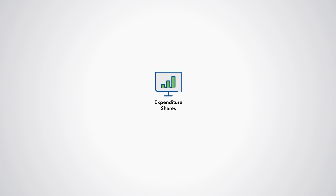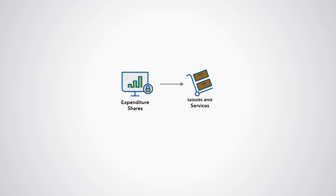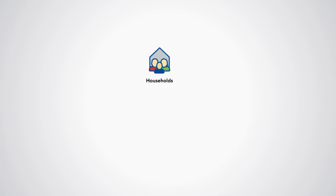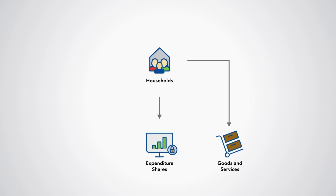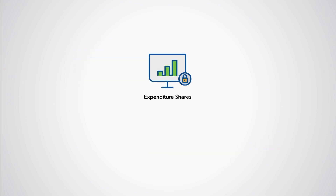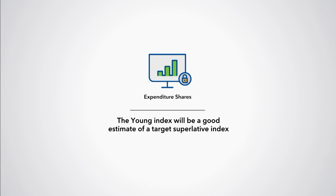By keeping the expenditure shares constant from the weight reference period to the price reference period, the underlying quantities are assumed to vary in response to changes in relative prices. If households tend to keep constant expenditure shares by substituting away from goods or services with relative price increases to those with relative price decreases, the weight reference period expenditure shares will be good estimates of the price reference period shares when the weights are introduced in the index. If expenditure shares stay unchanged, the Young index will be a good estimate of a target superlative index.